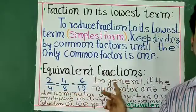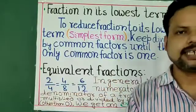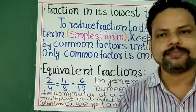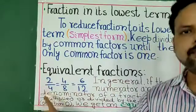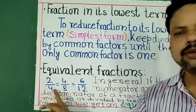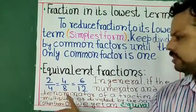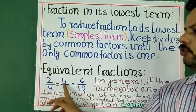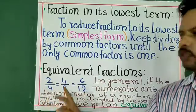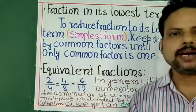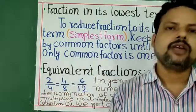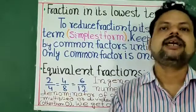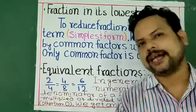Equivalent fractions — the ultimate value remains the same. Example: 2 by 4 equals 4 by 8 equals 6 by 12. Everywhere, 2 into 2 is 4 and 4 into 2 is 8. So by multiplying or dividing by the same number we can get equivalent fractions.